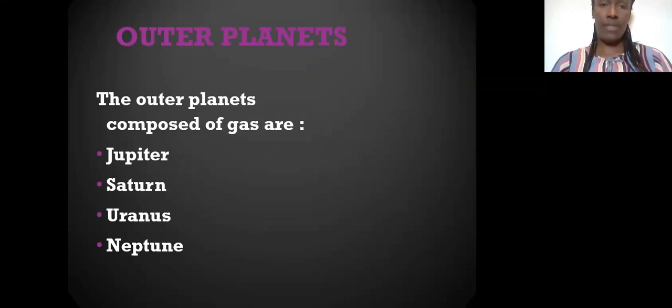Now we're going to look at the outer planets. The outer planets are the remaining planets away from the Sun. Those planets are composed of gases. Imagine if an astronaut tries to stand on those planets. If it is made out of gases, they will sink right through. They are Jupiter, Saturn, Uranus, and Neptune.